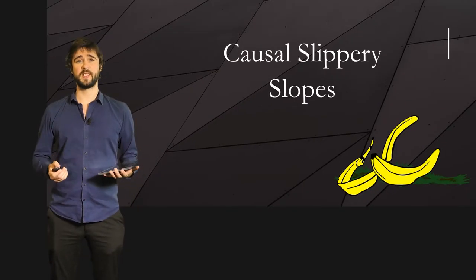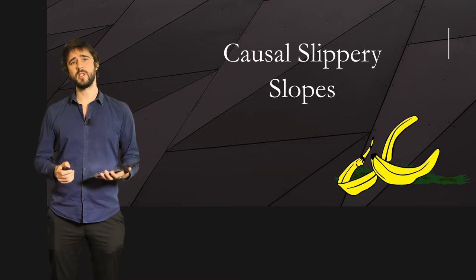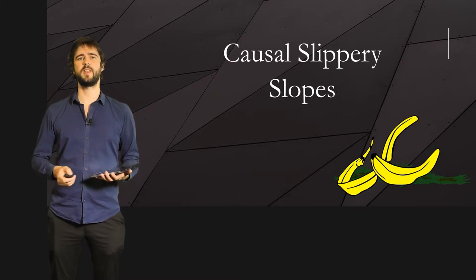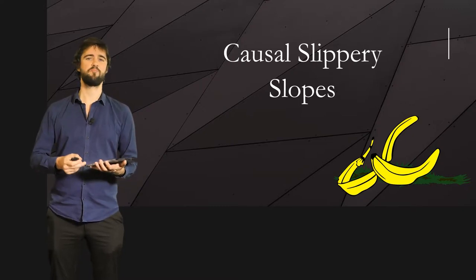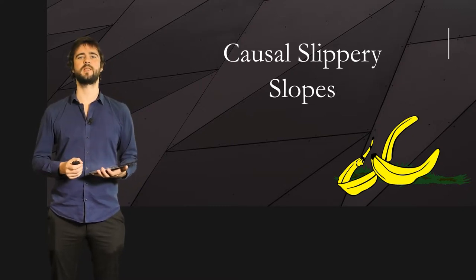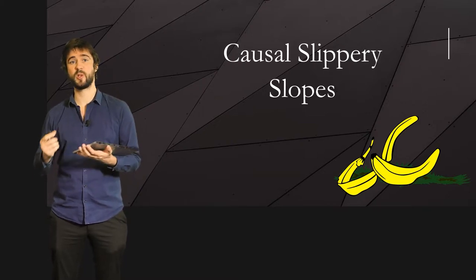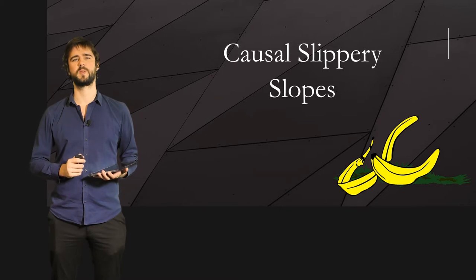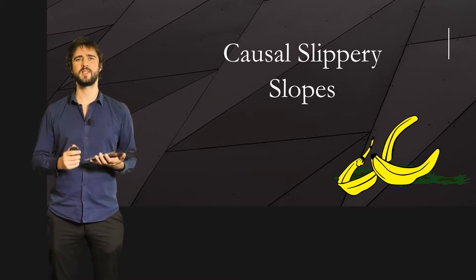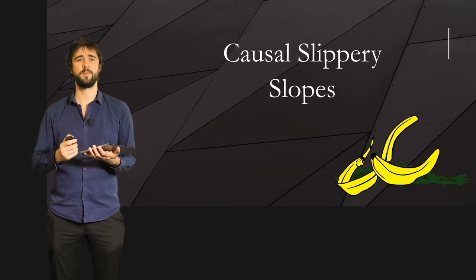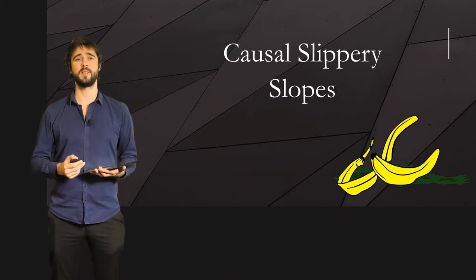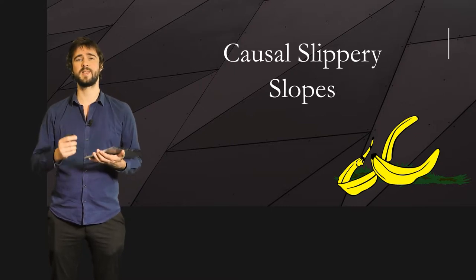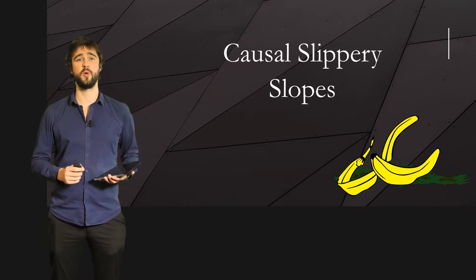When dealing with causal fallacies, you try to explain a phenomenon that already exists, and you make logical mistakes in the process. But fallacies do not always correspond to explanations. They can also correspond to predictions. That's what we are going to talk about in this video, and it's referred to as the slippery slope.